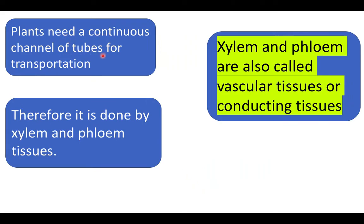Plants need a continuous channel of tubes for transportation — similar to the network of tubes in the human body. Plants also have a network of tubes forming a continuous channel for transportation of materials. This is done by xylem and phloem tissue, which are also called vascular tissue because they conduct water, minerals, and food.